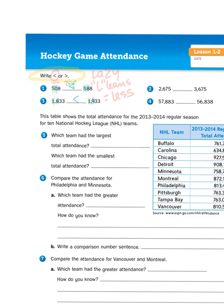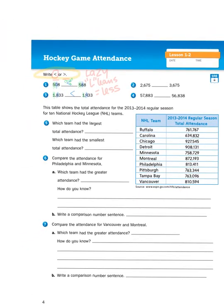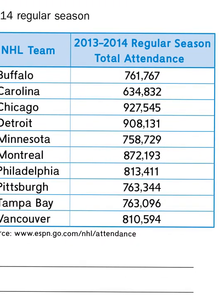Moving on to something a little more sophisticated. This table shows the total attendance for the 2013–2014 regular season for 10 National Hockey League teams, or NHL. You will often be presented with information in a table that you need to interpret. Question 5 asks which team had the largest total attendance and which had the smallest. All of the numbers run in the hundreds of thousands — there's a comma separating place values, with three digits on the left side of the comma and three on the right. So I know these are all in the hundreds of thousands.